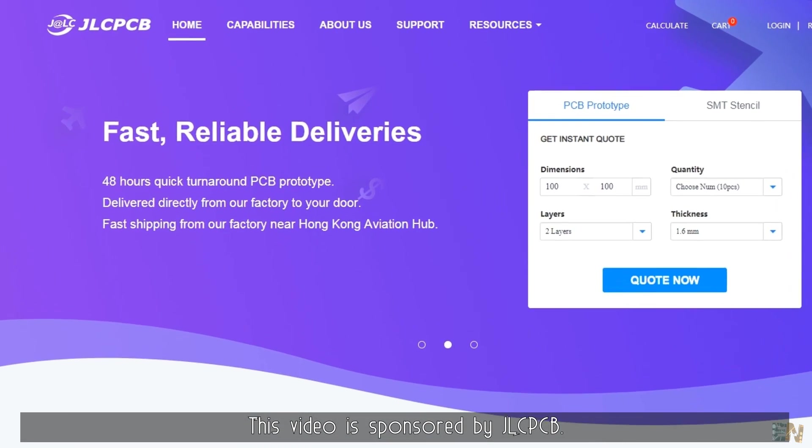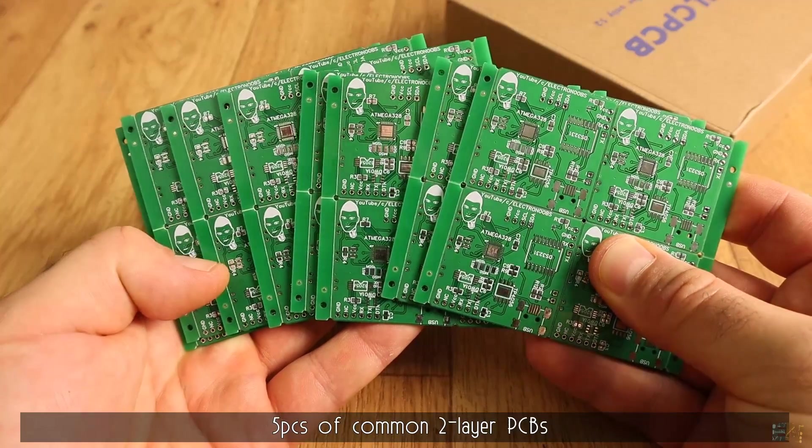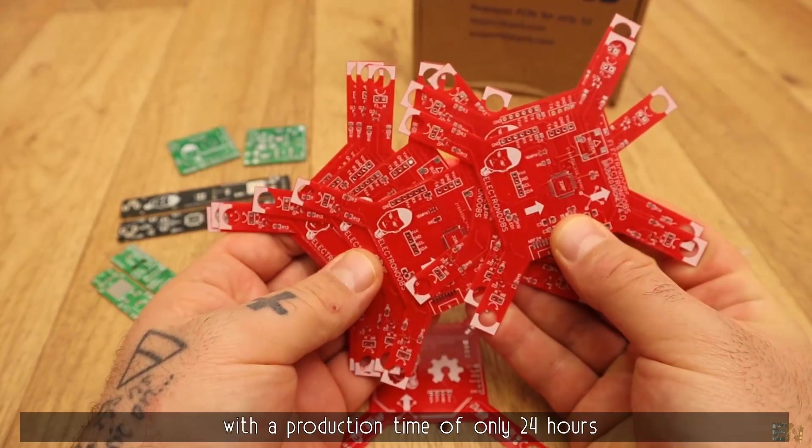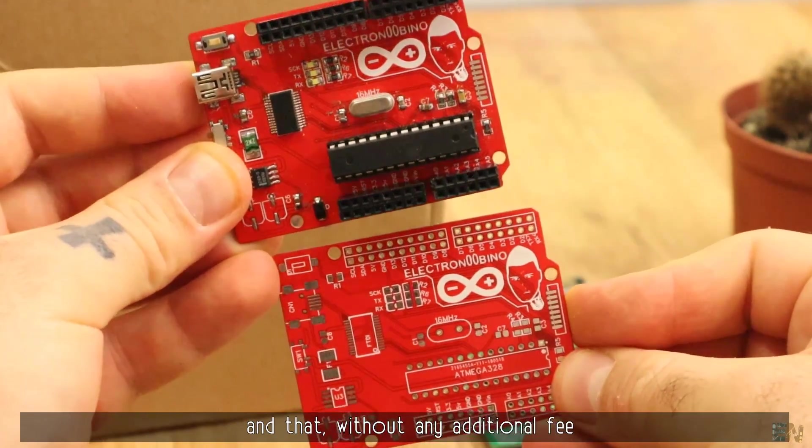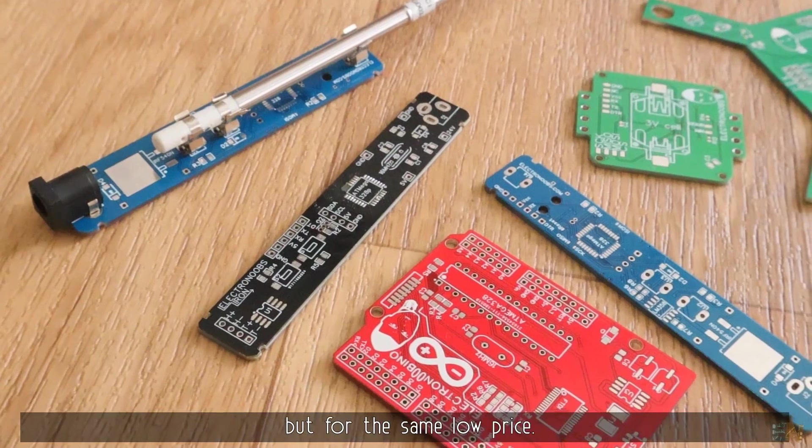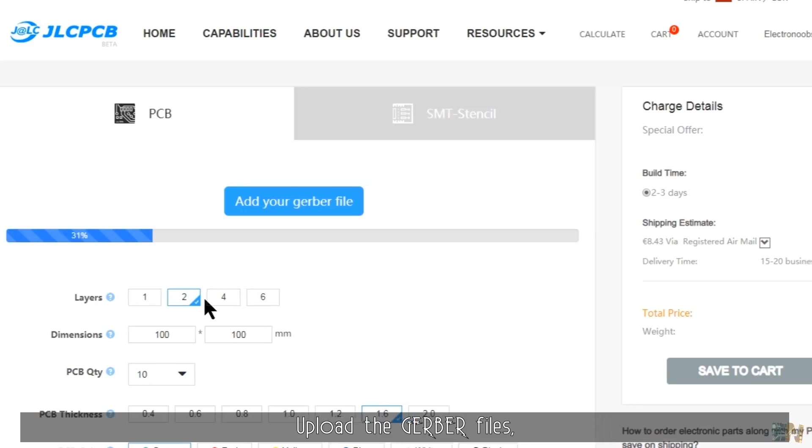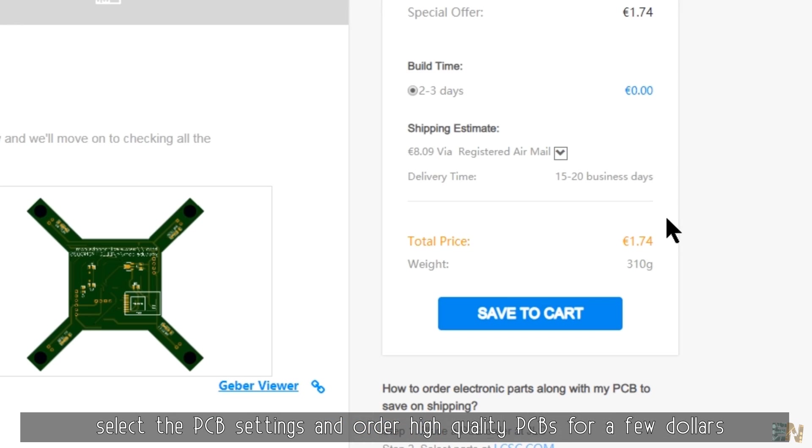This video is sponsored by JLCPCB, which upgraded their factory so now they can offer 5 pieces of common 2-layer PCBs with a production time of only 24 hours without any additional fees. Prototyping becomes faster than before but for the same low price. Upload the Gerber file, select the PCB settings and order high quality PCBs for a few dollars.